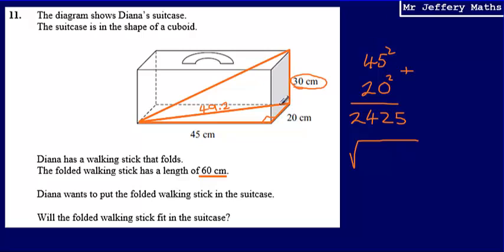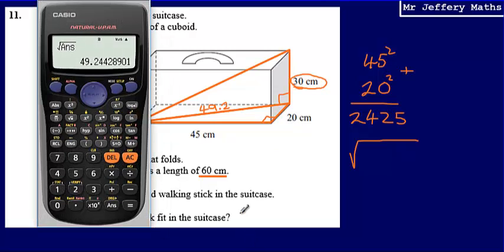So now I can use Pythagoras again to work out the length from one corner of the suitcase to the diagonally opposite corner. So working this out, I've got again, I'm trying to find the hypotenuse. I've got this length on the floor and then I've got my right angle and I've got a length of 30 going up.